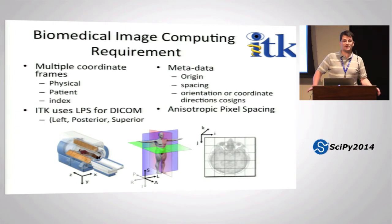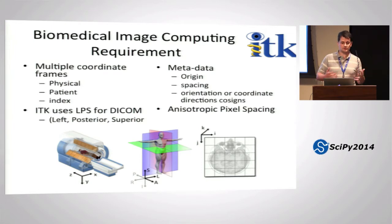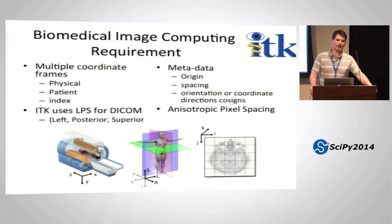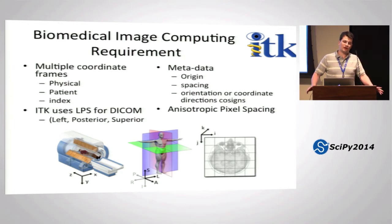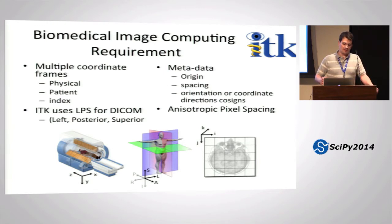Biomedical image computing has certain requirements different from plain image processing. You always need to keep in mind three different coordinate frames simultaneously: your basic array indexing (IJK), how that indexing maps to physical space via metadata including spacing, origin, and orientation, and how those XYZ coordinates map to the patient's left and right. You don't want to mix up left and right in medical imaging because the wrong organ could be removed. ITK uses the LPS coordinate system when reading DICOM.